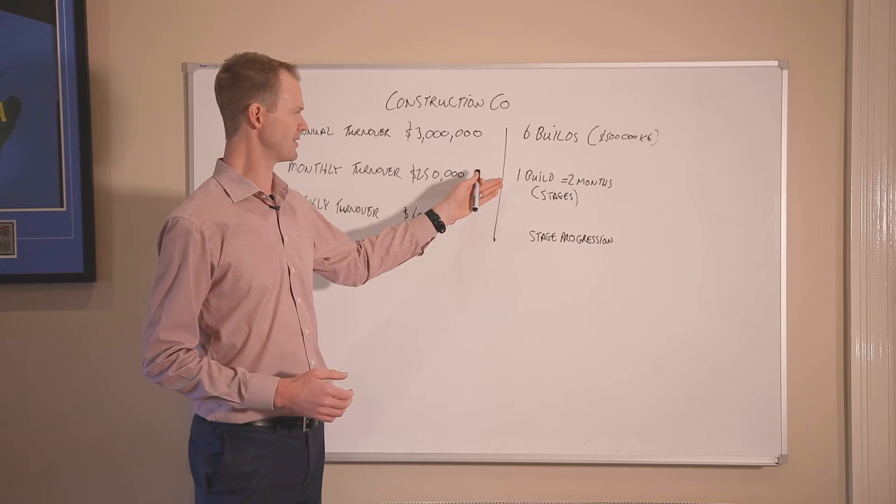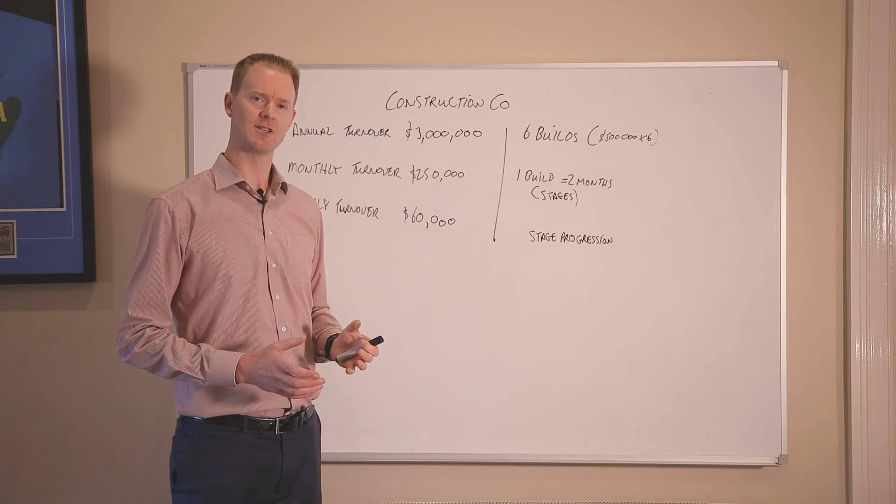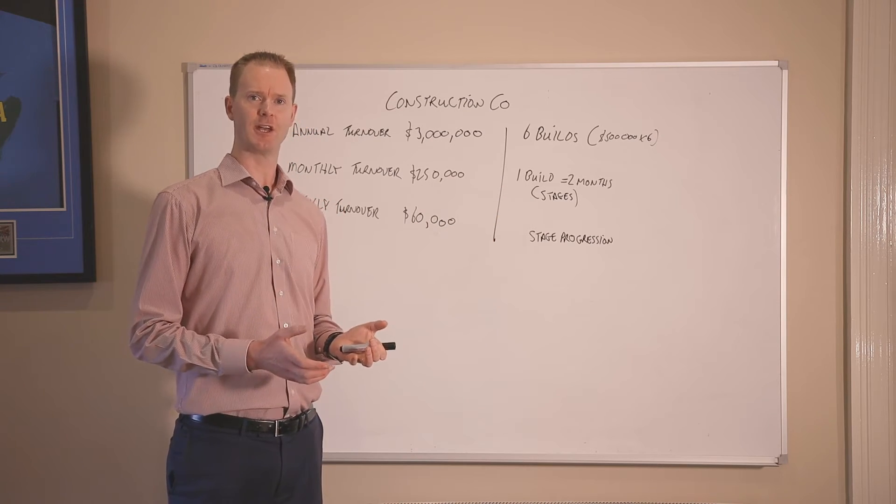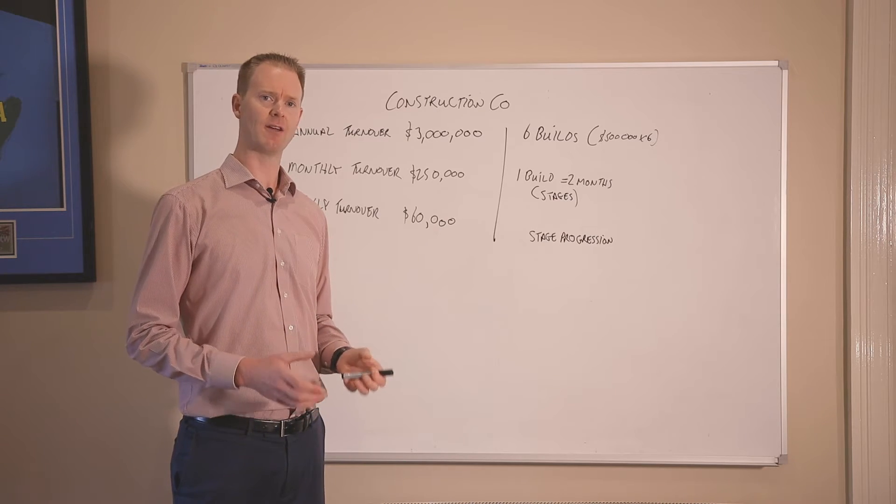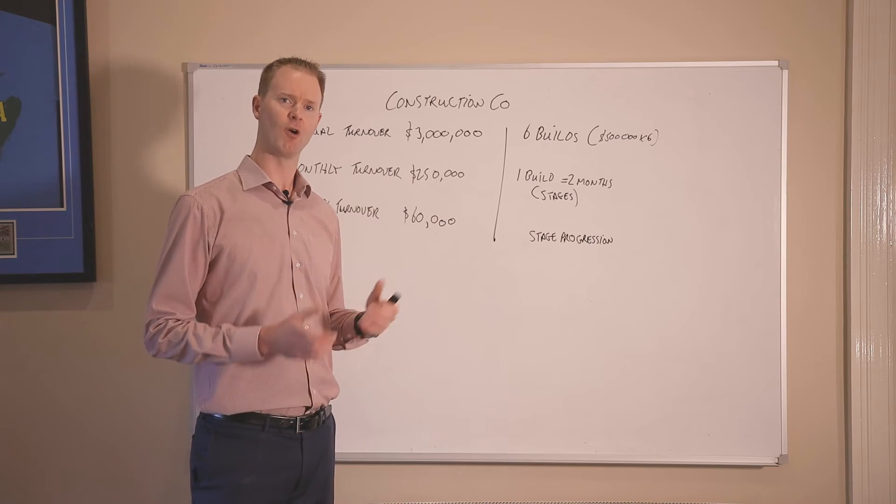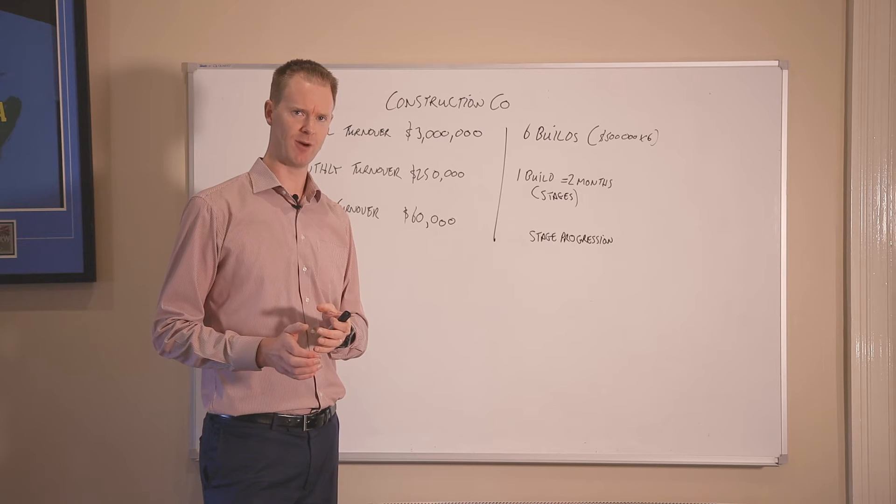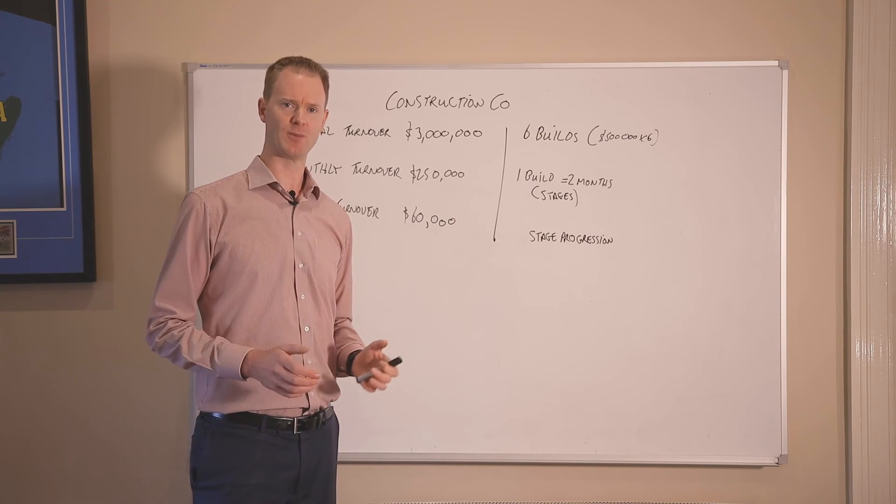So on a monthly basis, you're getting effectively half a house completed. So that's not a measure you can use. But you can certainly work on the different stages of the builds and identify for each of the properties that you currently got under construction, what stage is it up to? What stage will it be up to by the end of the month? And that's exactly the same with the weekly measurement.